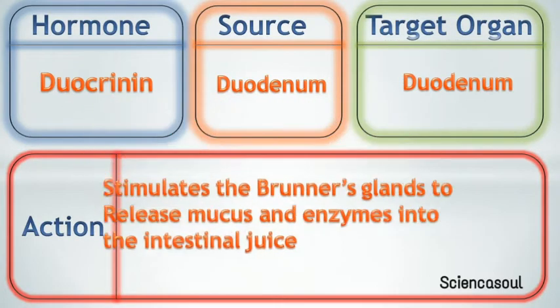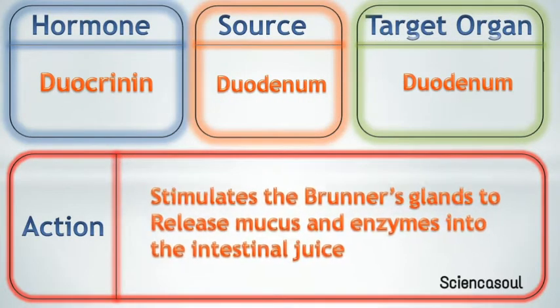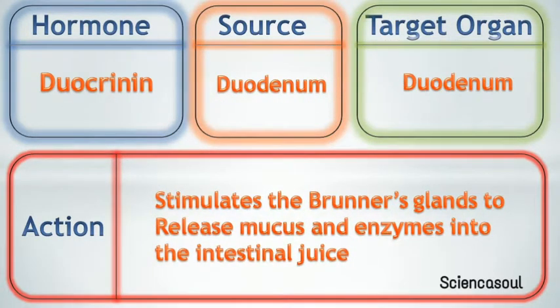Fifth hormone is duocrinin. Source of duocrinin is the duodenum. Target organ of duocrinin is also the duodenum. Action of duocrinin is to stimulate Brunner's glands to release mucus and enzymes into the intestinal juice.